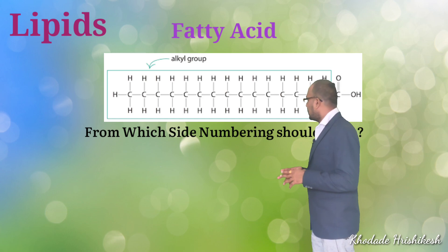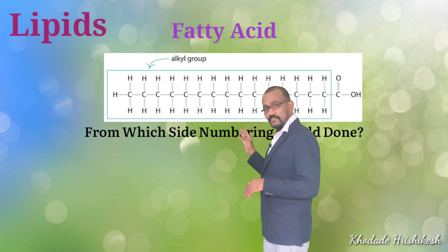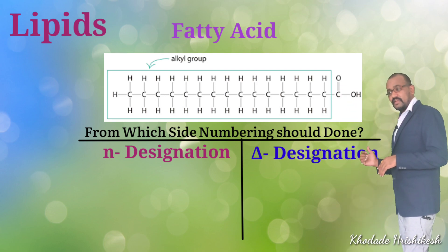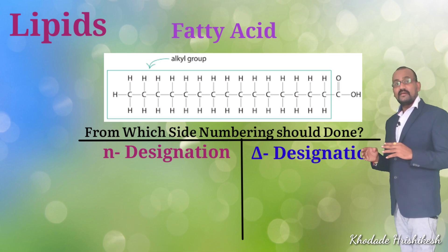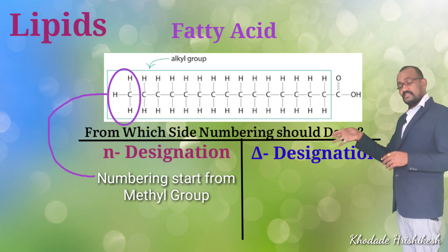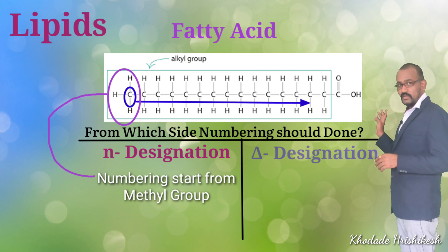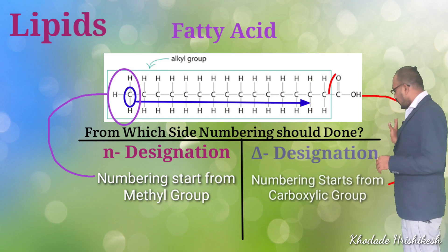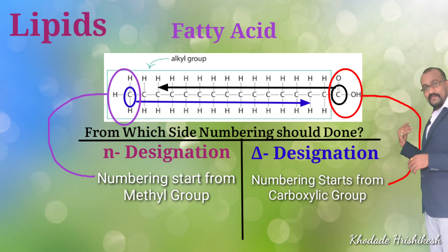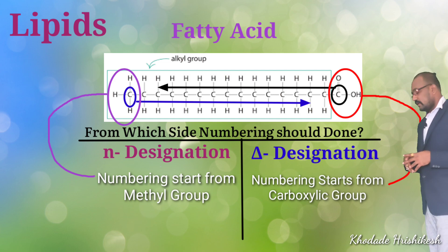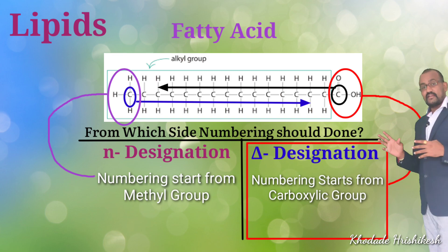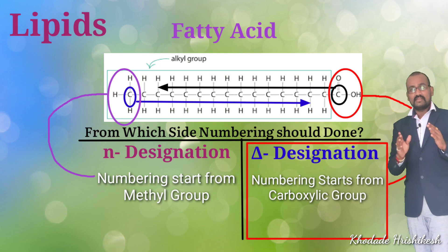A fatty acid can be named in two ways: by n-designation or by delta designation. In n-designation, carbons are numbered from the methyl group end — the methyl group (non-polar end) is carbon one, then second, third, fourth, and so on. In delta designation, carbons are numbered from the carboxylic end — the carboxylic end is carbon one. Generally, in most standard reference books, the delta designation numbering system is used, so don't get confused when you encounter these different systems.